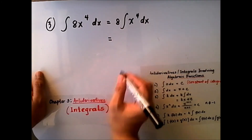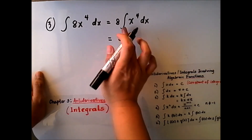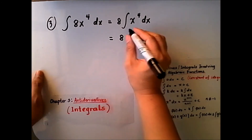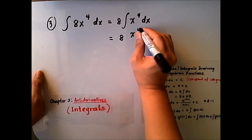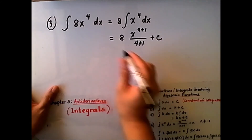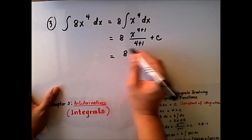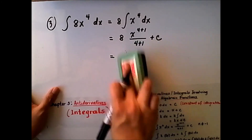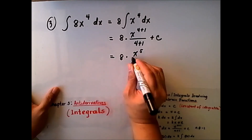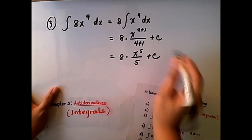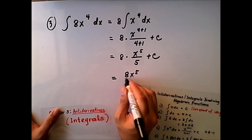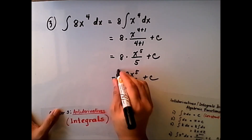Let us evaluate this further. Applying rule number 4, this becomes 8 times x to the 4 plus 1 over 4 plus 1, plus c. So this becomes 8 times x to the 5th over 5, plus c. Simplifying further, this becomes 8x to the 5th over 5, plus c.